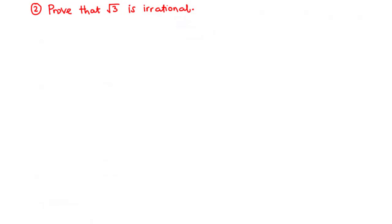In the previous video, we were able to prove that the square root of 2 is irrational. Now, in today's video, we are going to prove by contradiction that the square root of 3 is also irrational.